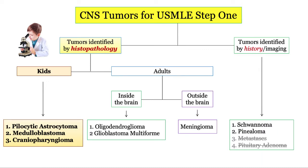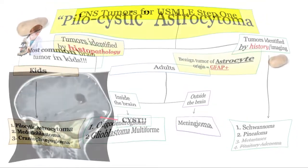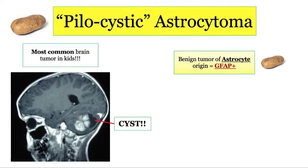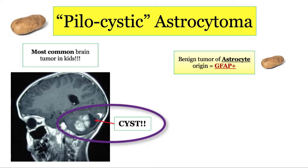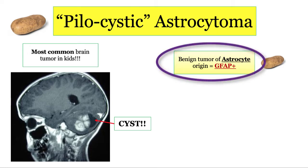Let's get started on tumor pathology. We'll start with CNS tumors found primarily in kids: pilocytic astrocytoma, medulloblastoma, and craniopharyngioma. The pilocytic astrocytoma — or as Dr. Sattar aptly calls it, the pilocystic astrocytoma — is the most common brain tumor in kids overall. These benign tumors are derived from astrocytes, so they'll stain positively for GFAP, just like glioblastoma, which we'll see later on.